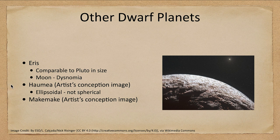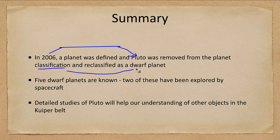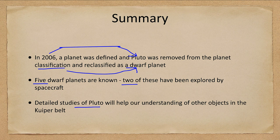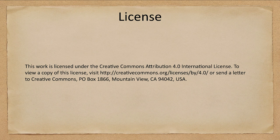In summary, in 2006 a planet was formally defined for the first time, which meant Pluto was removed from the planet classification and reclassified as a dwarf planet. We now know five confirmed dwarf planets, two of which — Ceres and Pluto — have been explored by spacecraft. The studies of Pluto and the Kuiper belt will help us understand these other distant objects. That concludes this lecture on Pluto and the dwarf planets — see you next time.